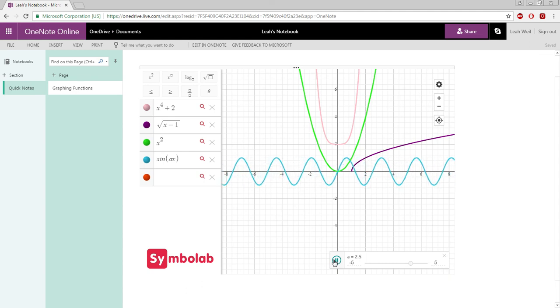You can change the range for A by hovering your mouse over to the value and clicking on the arrow signs to the right of it. You can also manually type in a range. And that is how to use the Symbolab graphing calculator on OneNote online.